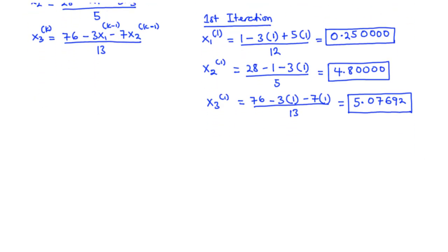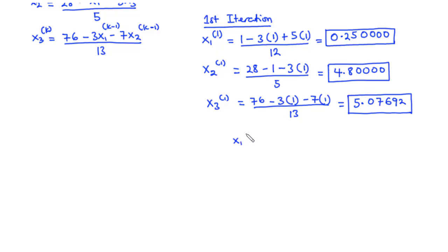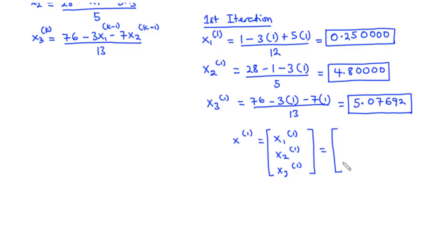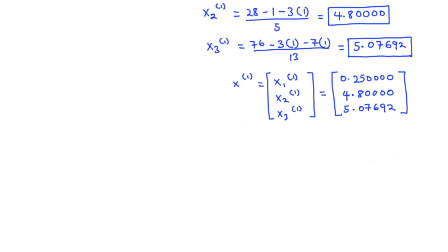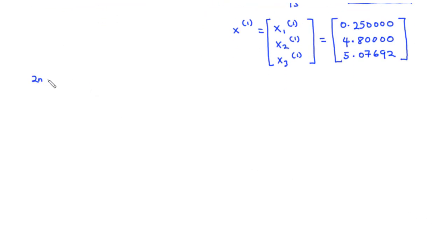At the end of the first iteration step, we have x(1) = [x1(1), x2(1), x3(1)] equal to 0.250000, 4.80000, 5.07692. This is the approximation to the exact solution after the first iteration step. Now let's move on to the second iteration step.